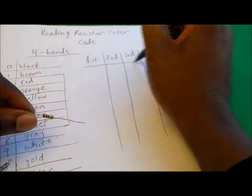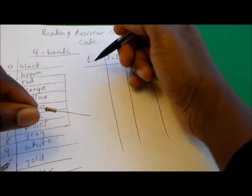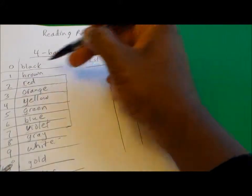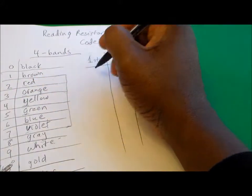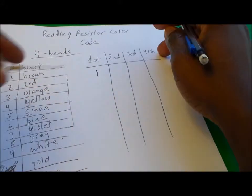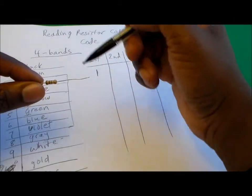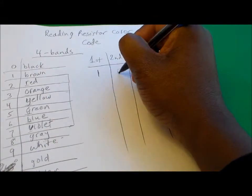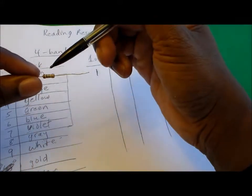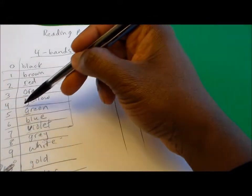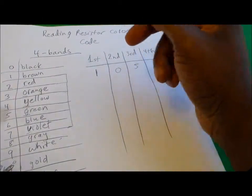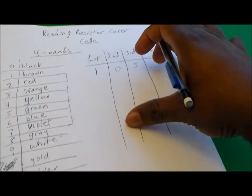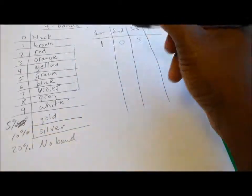The first band on this resistor here is brown, and brown equals one, so we'll put the number one there. The second band is black, which is zero. The third one is green, which is the number five, and then the fourth band is gold, which is 5 percent.